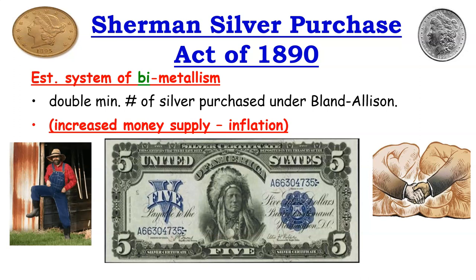The 1890s see a little bit of compromise between the two sides on the money issue — gold, silver, and currency — which is the most important issue of the 1890s and the central issue of the 1896 election. In 1890, there was a compromise establishing more of a system of bimetallism. They doubled the amount of silver purchased under the Bland-Allison Act from the 1870s, increasing the money supply and hopefully bringing about some inflation to help farmers. They also began printing silver certificates — paper dollars that could be exchanged for silver.